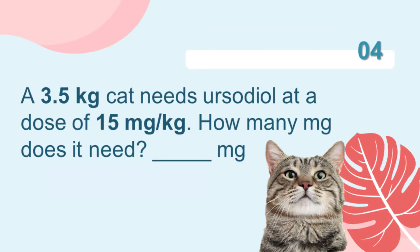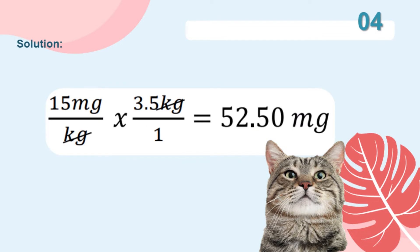Next, a 3.5-kilogram cat needs ursodiol at a dose of 15 milligrams per kilogram. We have to calculate how many milligrams of ursodiol the cat needs. We have 15 milligrams per kilogram multiplied by 3.5 kilograms, which is the weight of our cat. The answer is 52.50 milligrams of ursodiol.